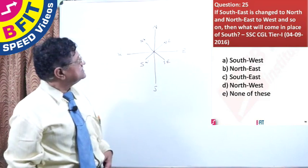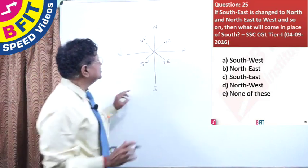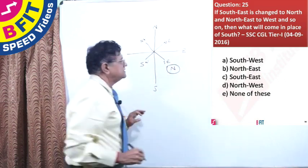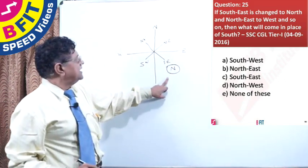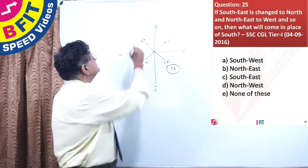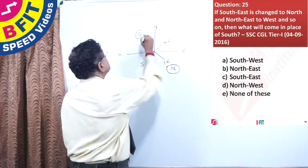If South-East changed to North, South is changed to North. Then what will happen? The opposite side will become South. This will become South.